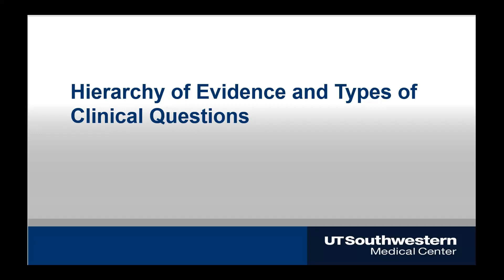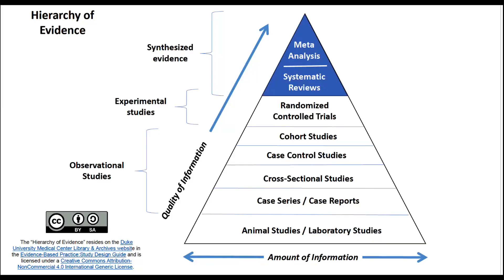When you're talking about the searching or accessing part of evidence-based practice, you'll often see this pyramid or some variations on it. It's a guide to what types of articles have the highest quality of clinical information. And this is great in theory, and oftentimes it does work, but the pyramid is a little bit misleading in that it makes it look like you should always seek out a study or publication type that is higher up on the pyramid.